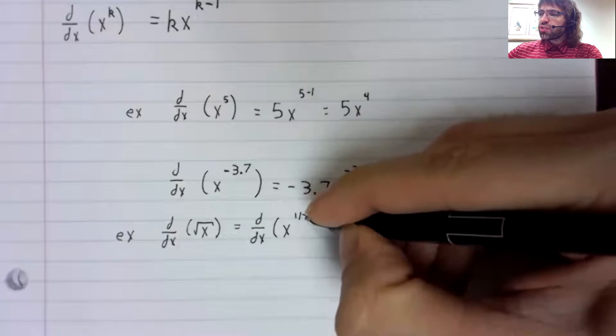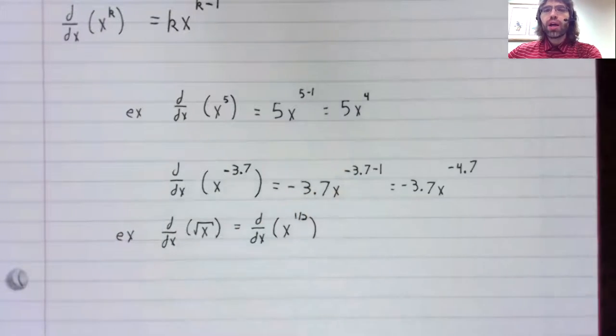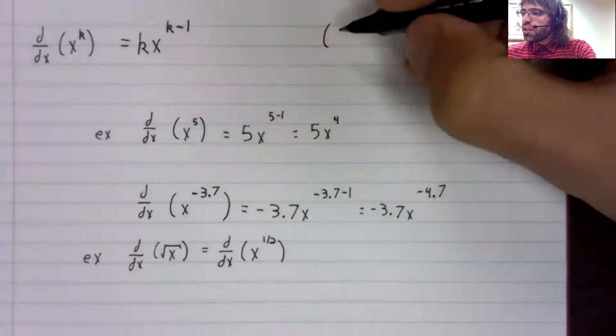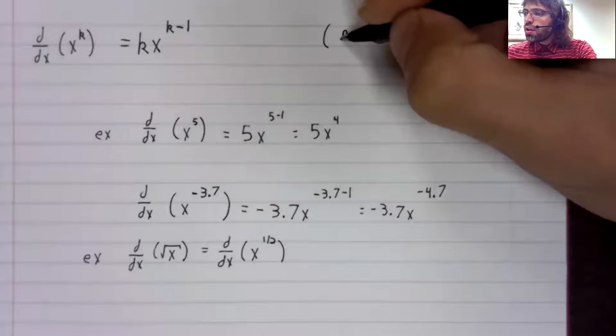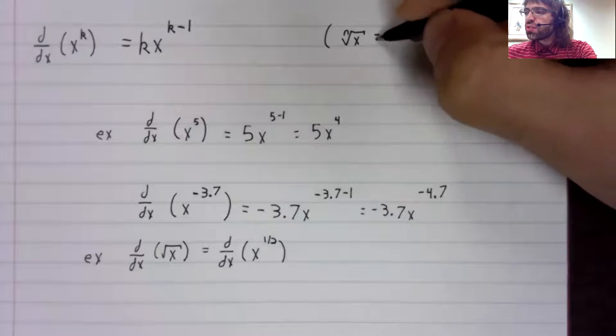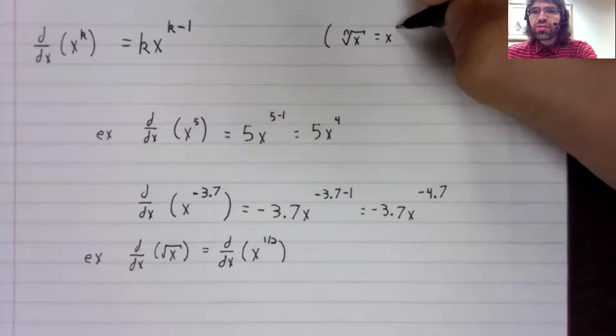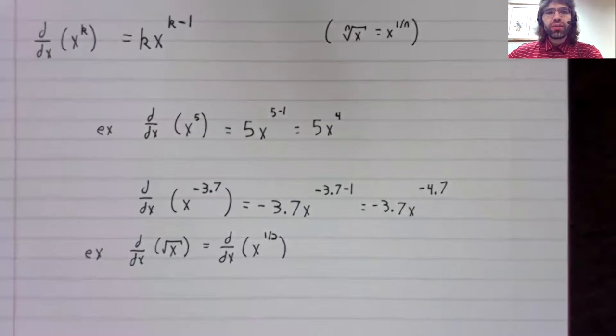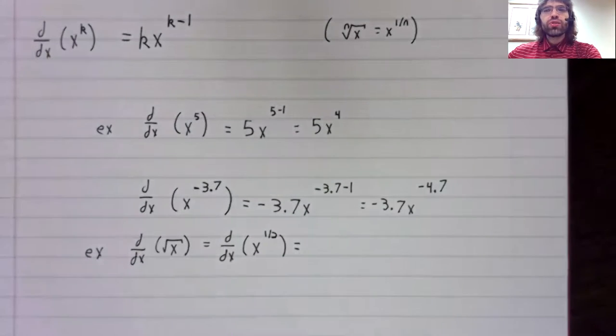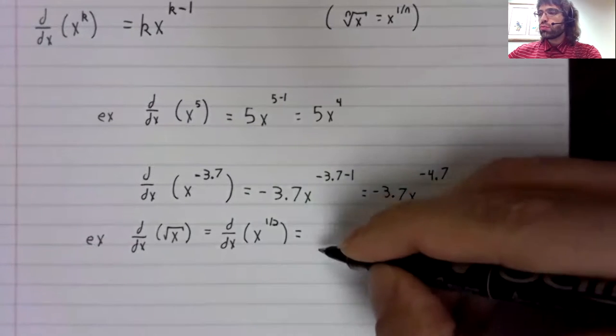It actually is, though. It's x to the one-half power. In general, the nth root of x is x to the one over n. So we can differentiate this using the power rule.